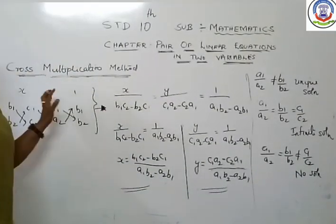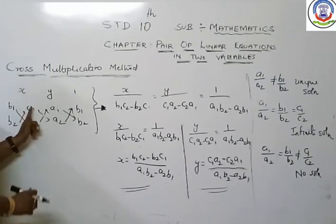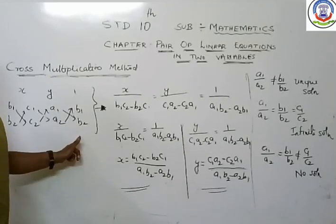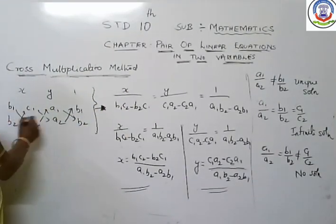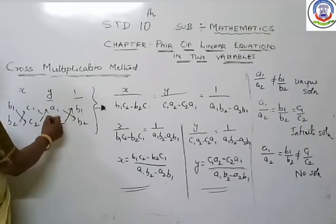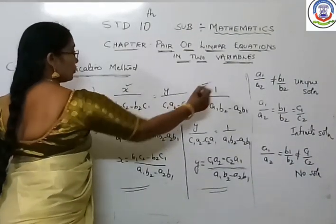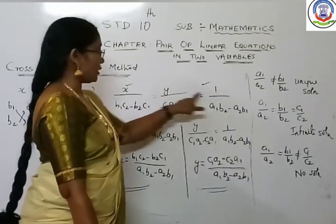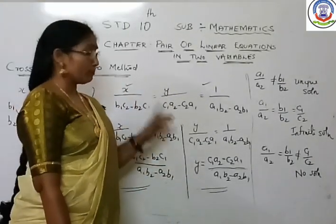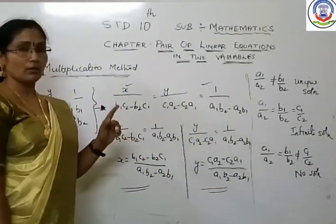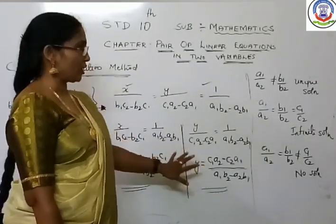Here, you have written the coefficients of x, y and constants separated. By this way — b1, b2 first, that means the coefficients of y, then constants, then coefficient of x, then coefficient of y again — then cross multiplied. You have got two relations: x upon (b1·c2 − b2·c1), y upon (a1·b2 − c1·a2 − c2·a1), and 1 upon (a1·b2 − a2·b1). Equating these gives the values of x and y.